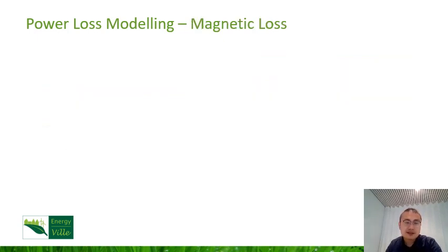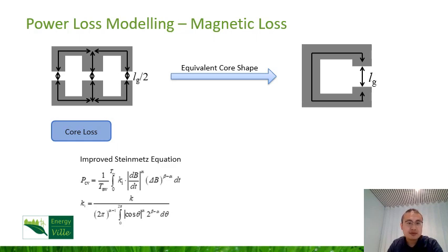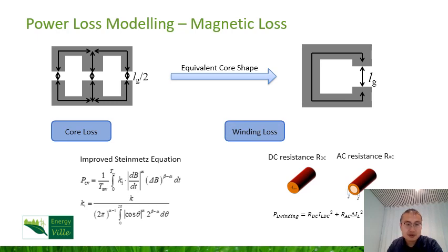As for the inductor design, in this paper an EE-shape core is used, and the equivalent C-shape is analyzed for designing the inductor. The losses on the inductor are mainly core losses and winding losses. For the core losses, the improved Steinmetz equation is used for estimating the core loss. As for the winding losses, considering the current ripple, the skin effect is considered. In the end, the winding losses can be the summation of DC resistance loss and AC resistance loss.